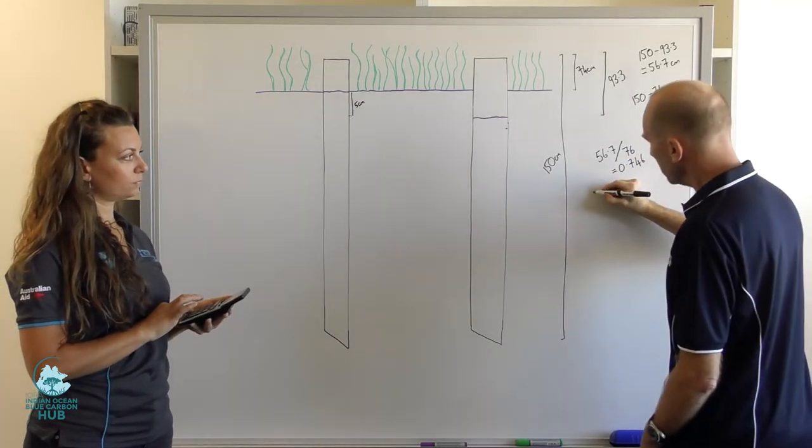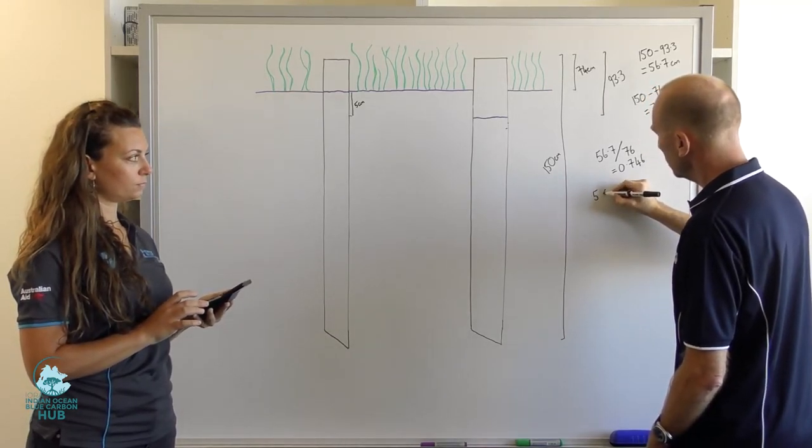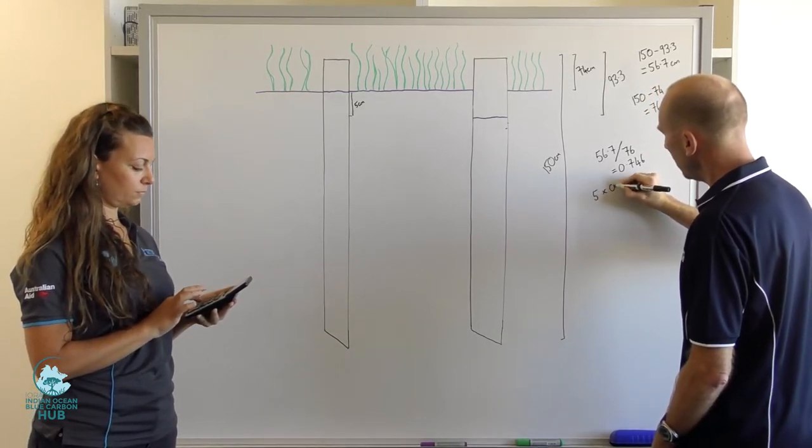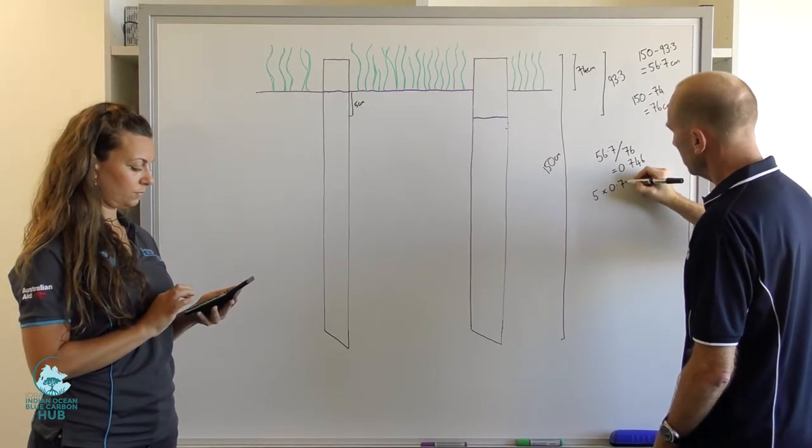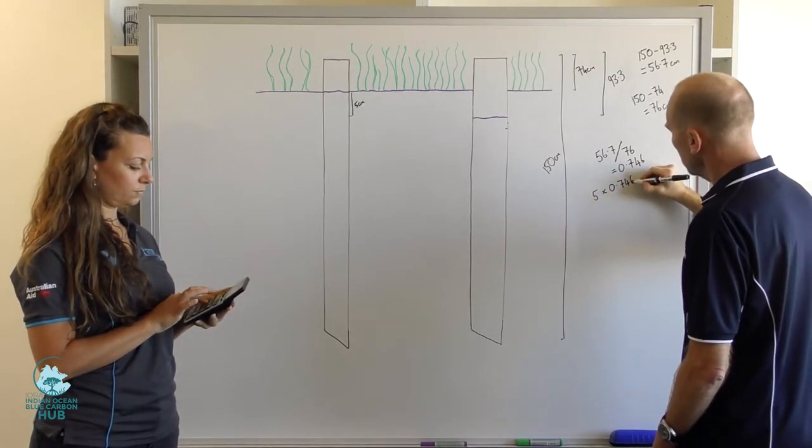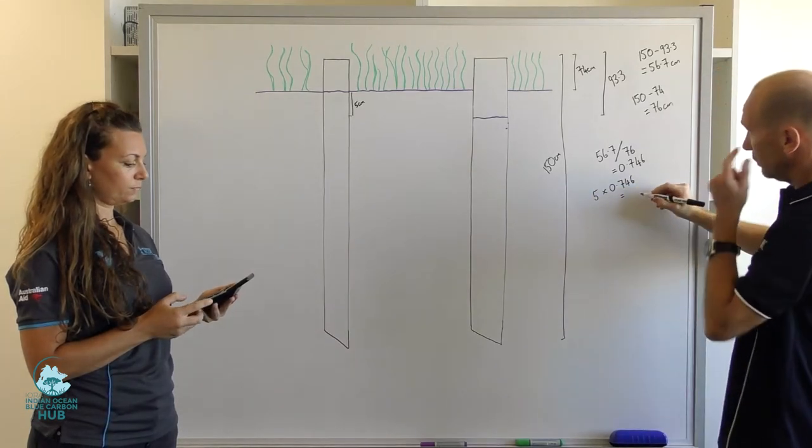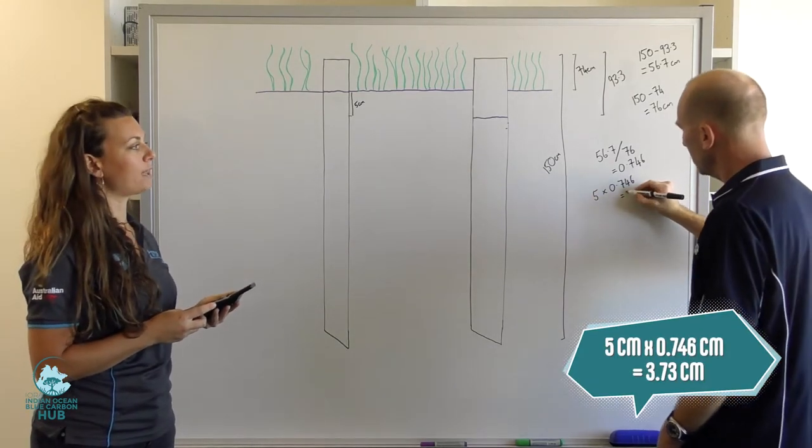Then, let's say we want to take a 5 centimeter core. We want to multiply that to get the equivalent length, which would be 3.73.